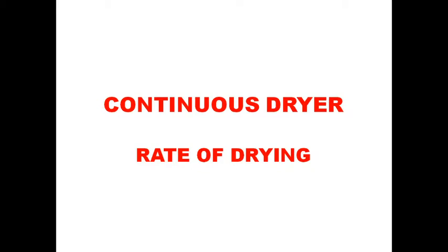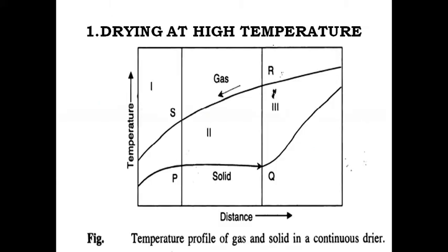Hello students, we are going to discuss the rate of drying for continuous direct heat dryers. Direct heat dryers fall under two categories, namely whether high temperature or low temperature prevail in the drying. First one: drying at high temperature.